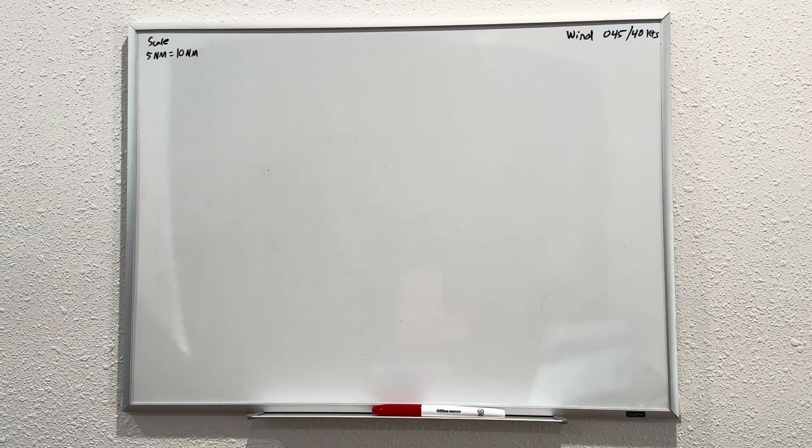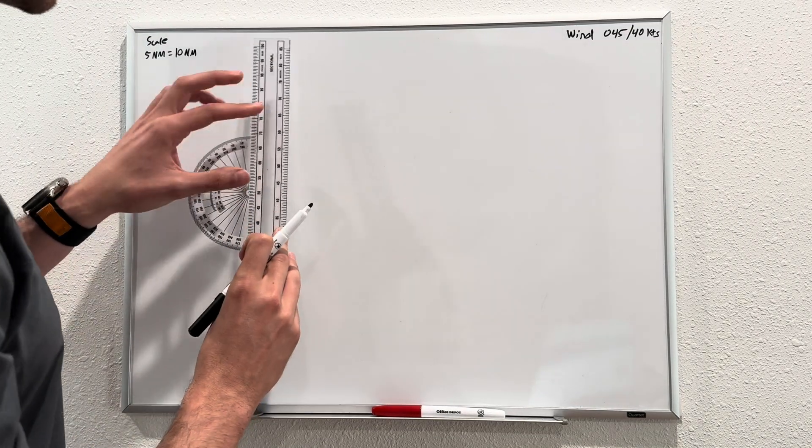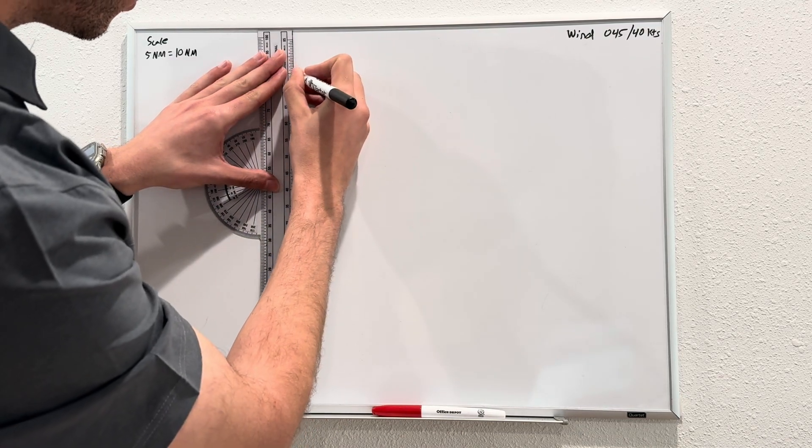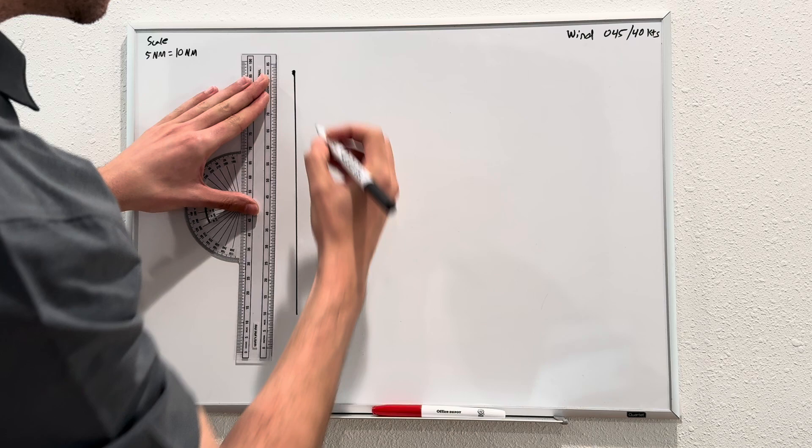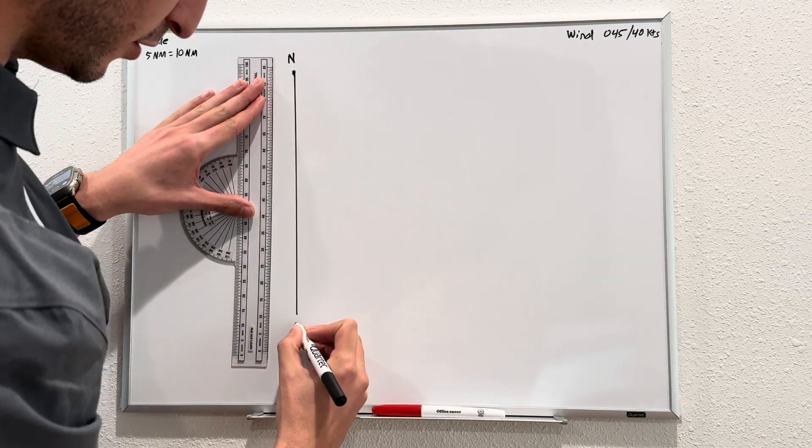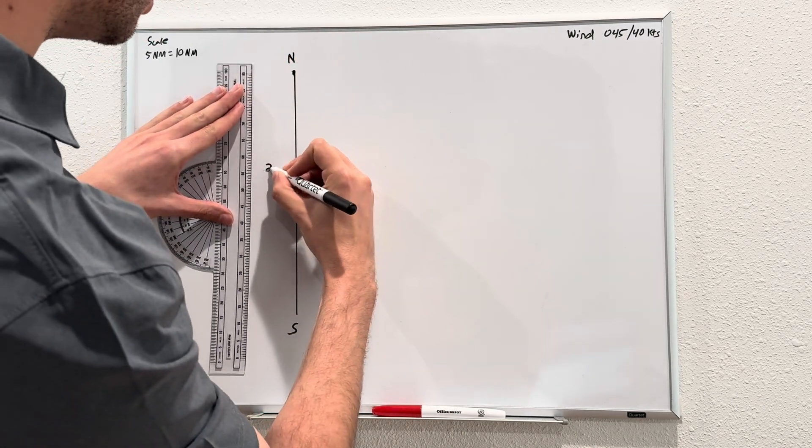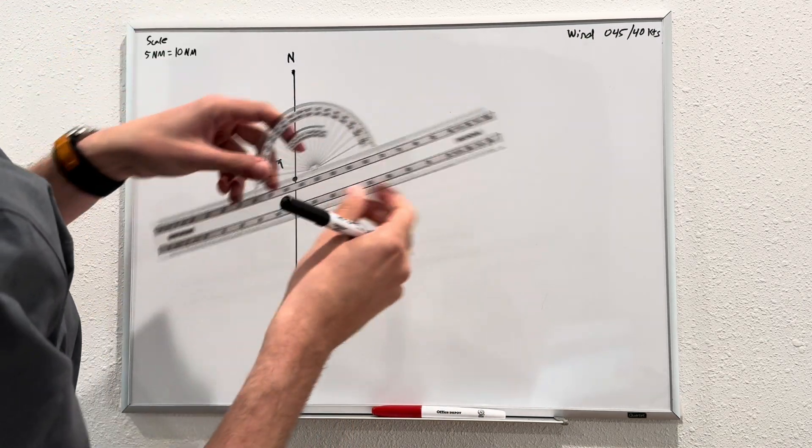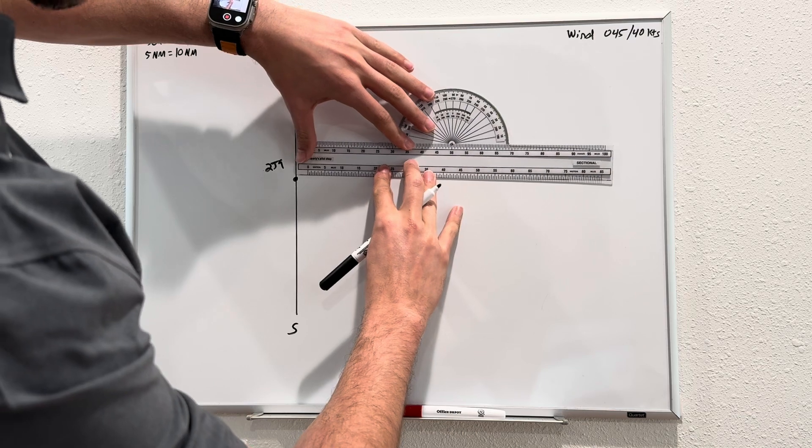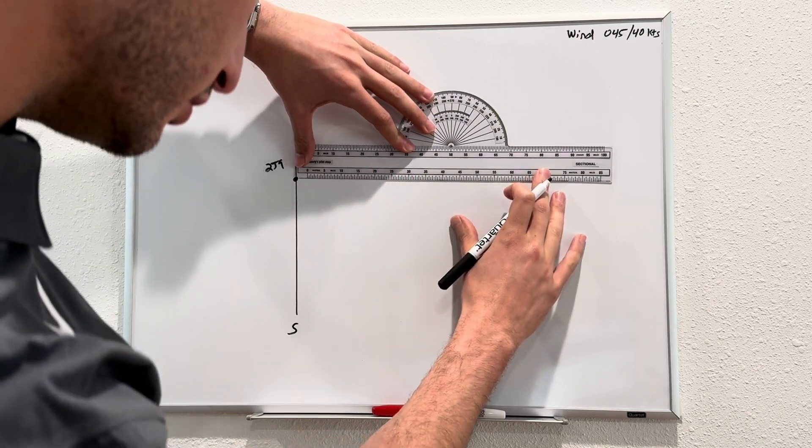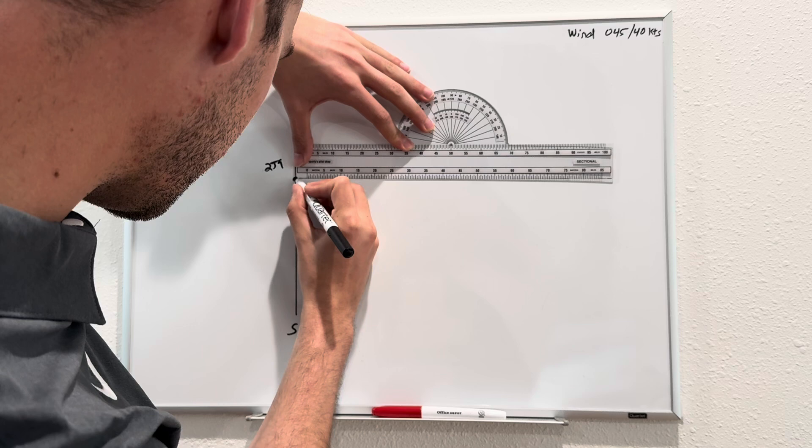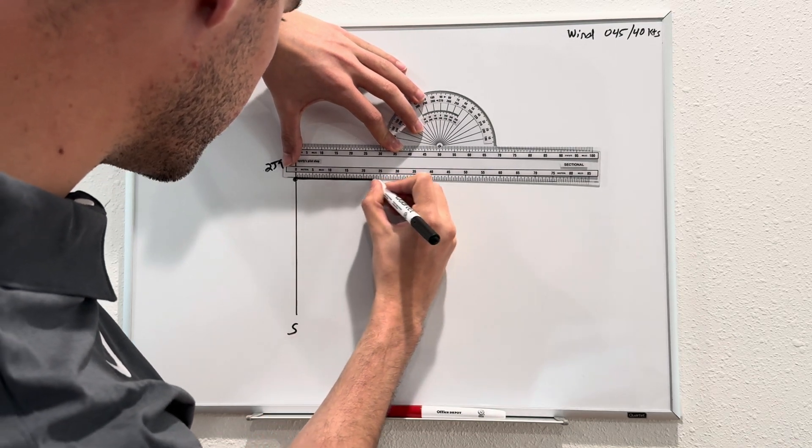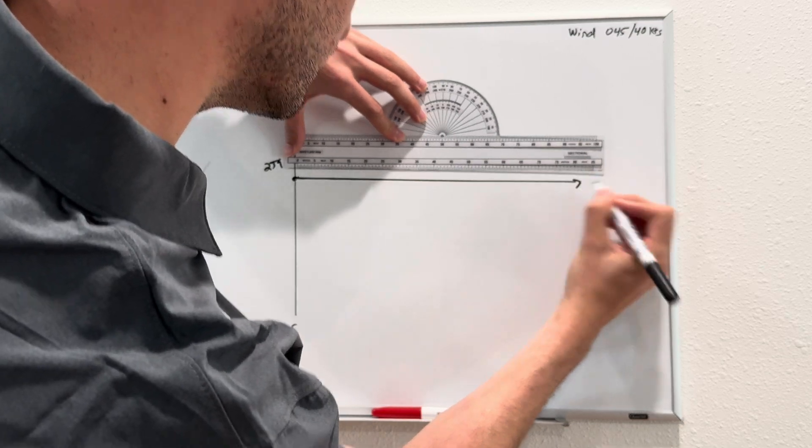As any good pilot, you always want to go ahead and get your bearings. So draw a north-south line. Here's your north and here's your south. In the middle there, we're going to draw a point, and that's Quincy, where we're departing from.